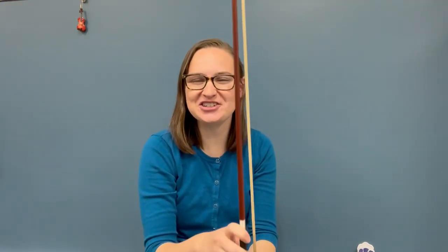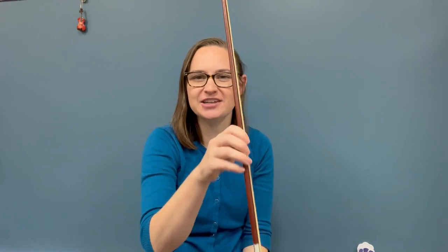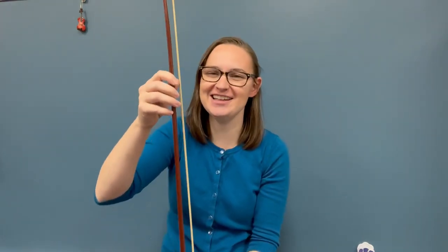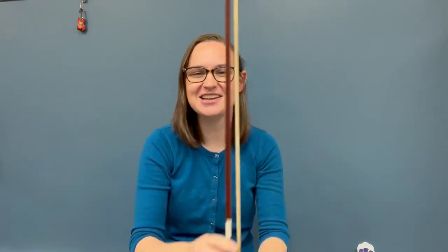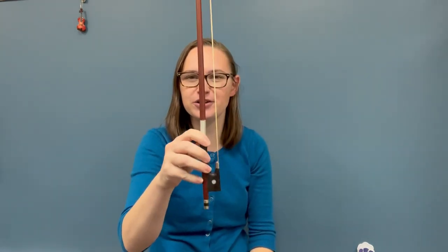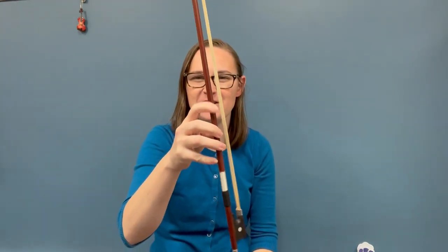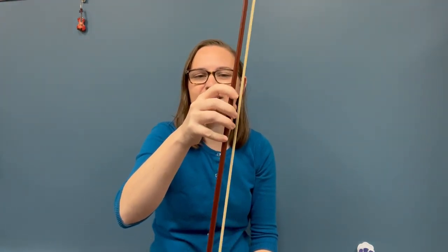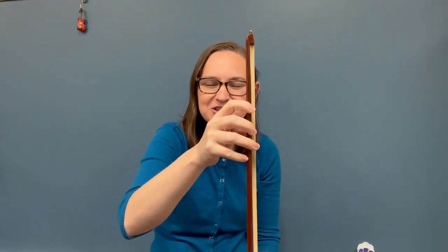So you also want to make sure when you're doing this one that you are not cheating and just sliding your hand down the bow like this. That's a no-no. We are not doing that. That doesn't help you work on your fingers. So start with your bow hold and you're going to crawl your fingers from the frog to the tip on the stick of the bow, practicing, working on getting those fingers to be independent and strong.